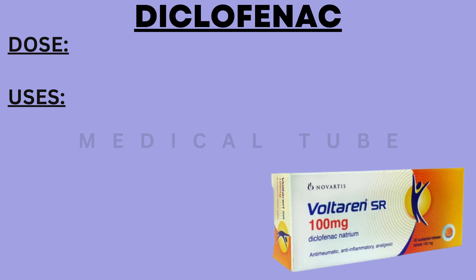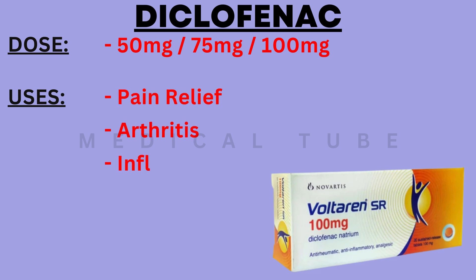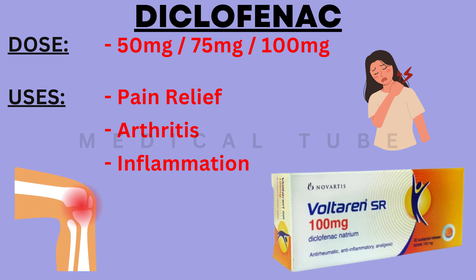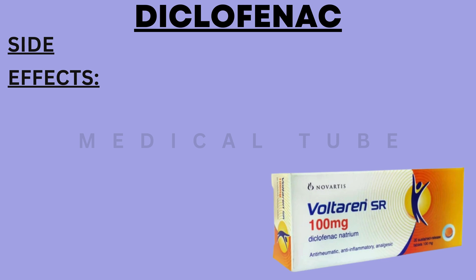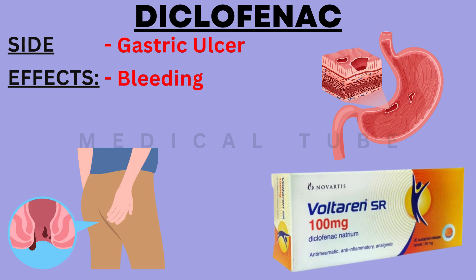Next is Diclofenac. The dose of Diclofenac is 50 mg, 75 mg, or 100 mg. It is used to control pain, arthritis and inflammation. The side effects of Diclofenac are gastric ulcer, bleeding and skin reaction.